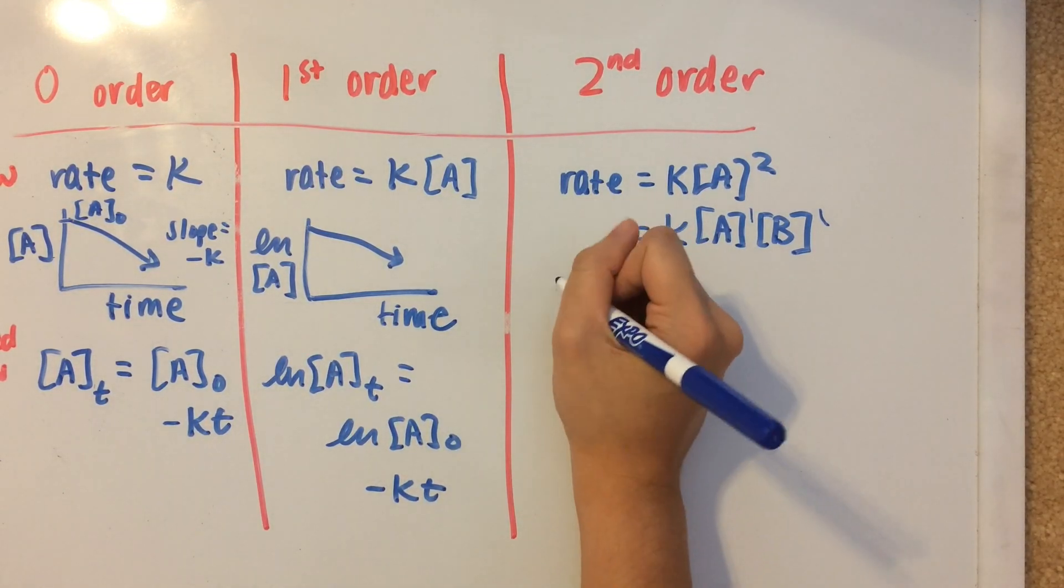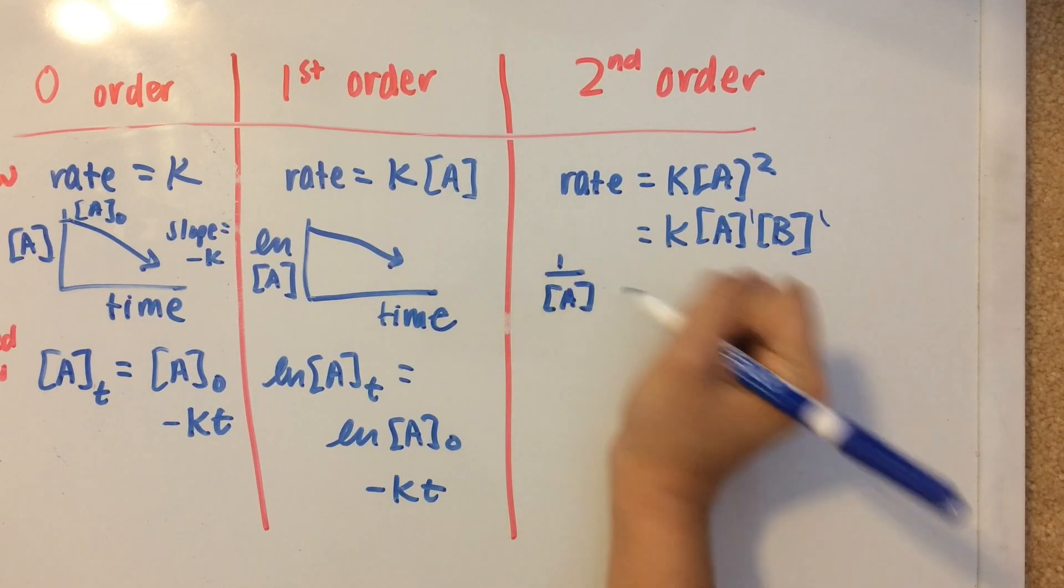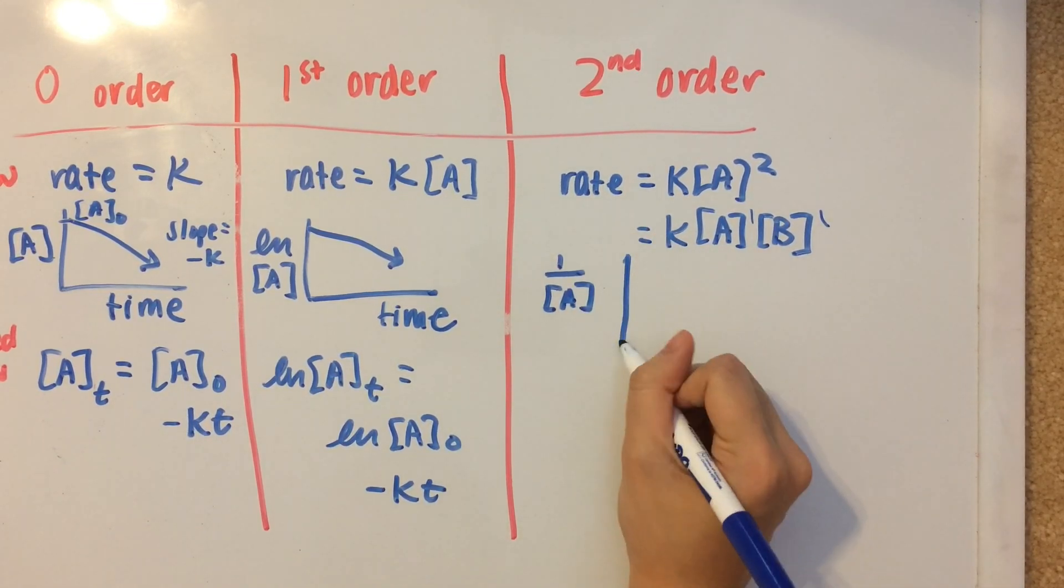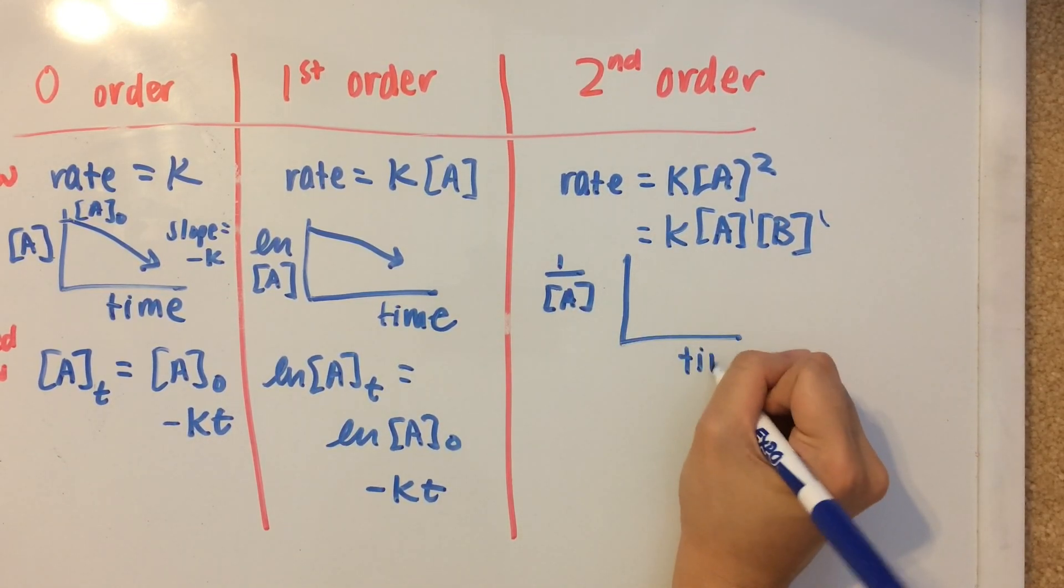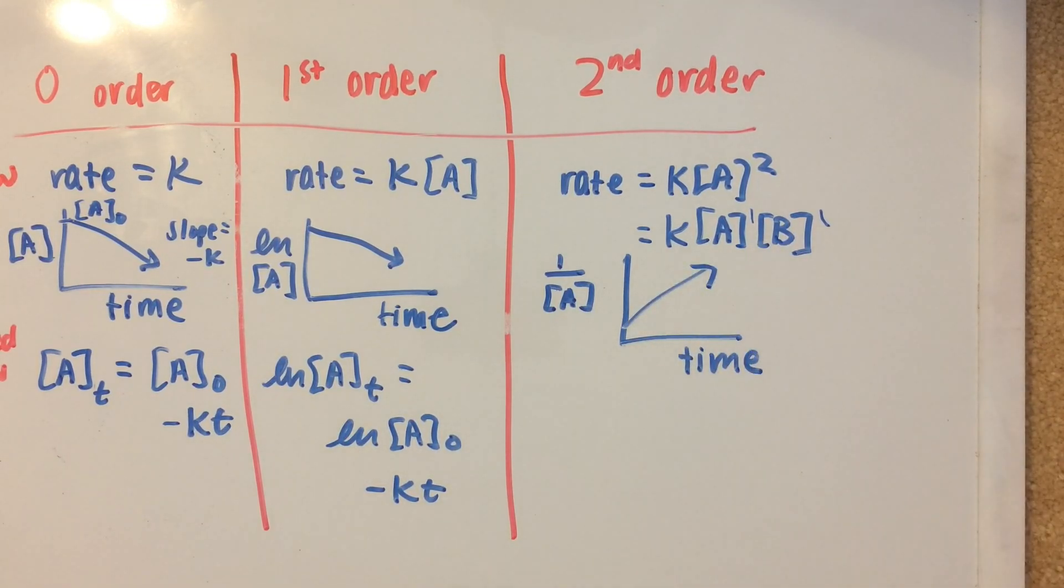Now the graph looks like this, with the reciprocal of the concentration of A on the y-axis and time on the x-axis still. But this one is going to have a positive slope.